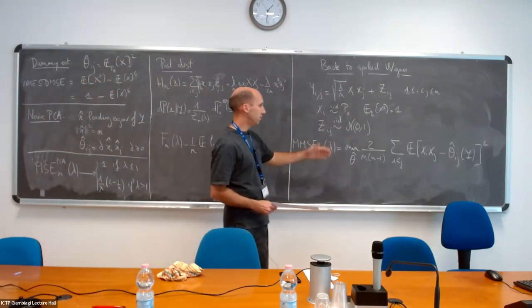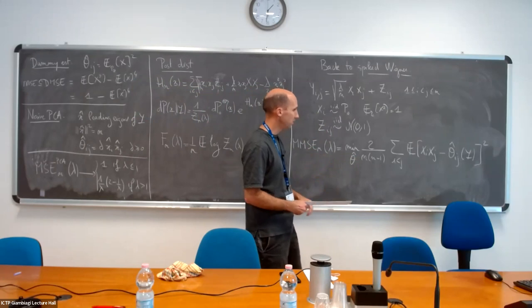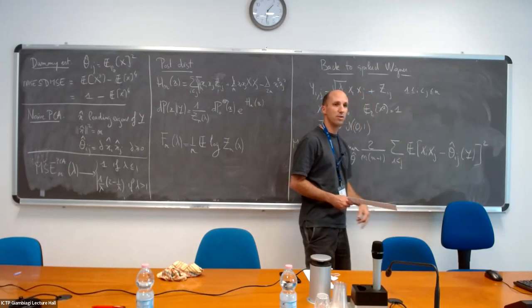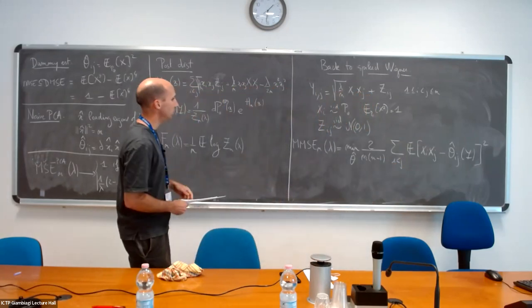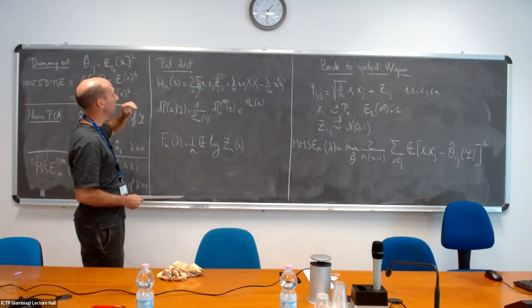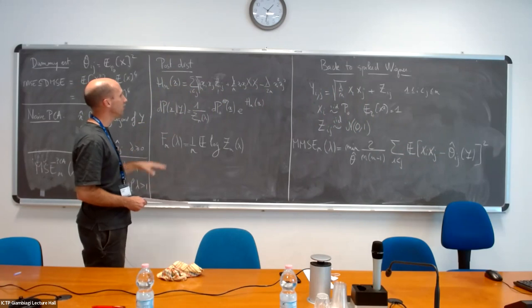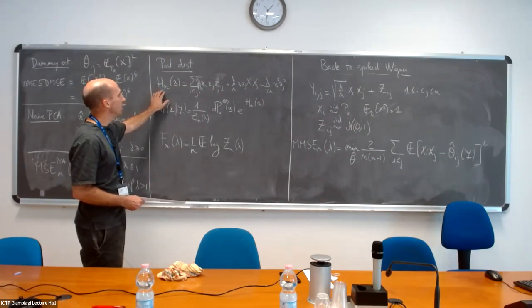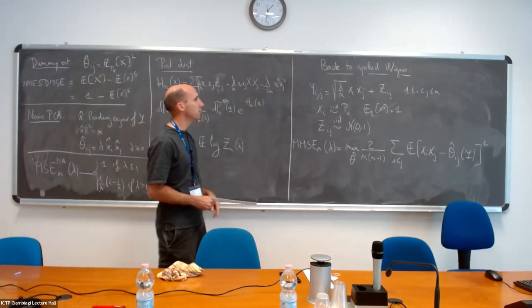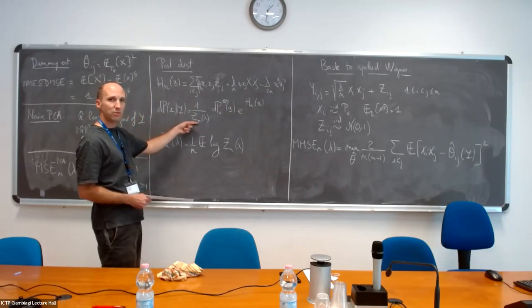As should now be clear, this minimum is achieved by the posterior mean of the product x_i x_j given the observation. Here I wrote the posterior distribution knowing y, and this is the corresponding Hamiltonian, which has exactly the same structure as before, but now I have a product of x_i x_j.